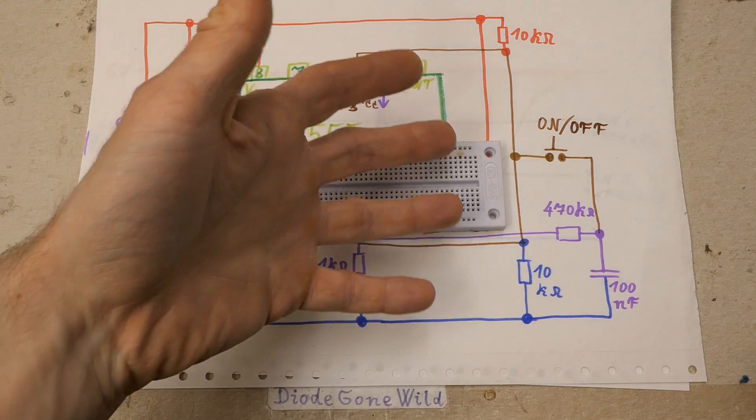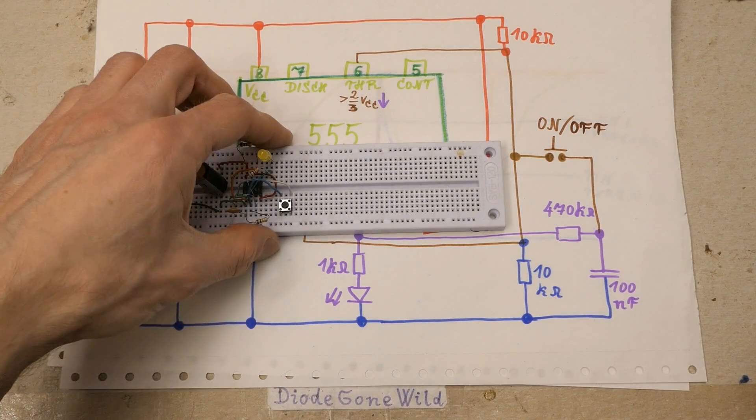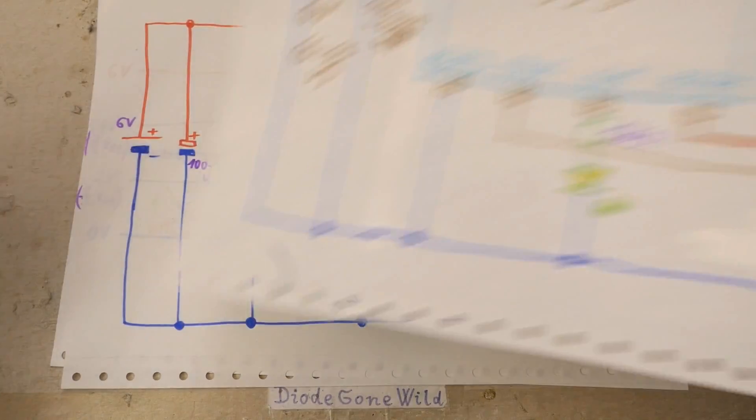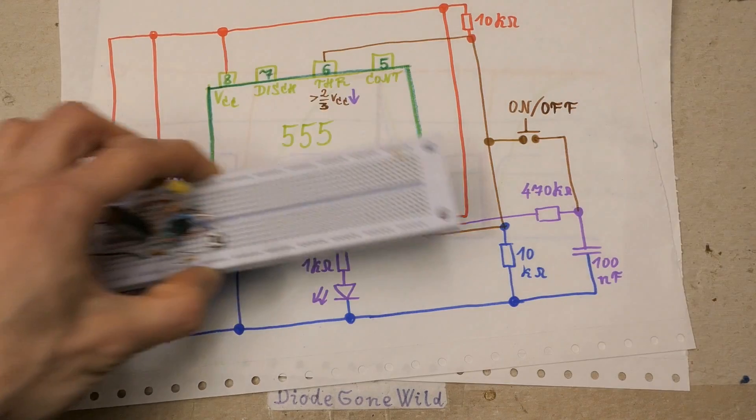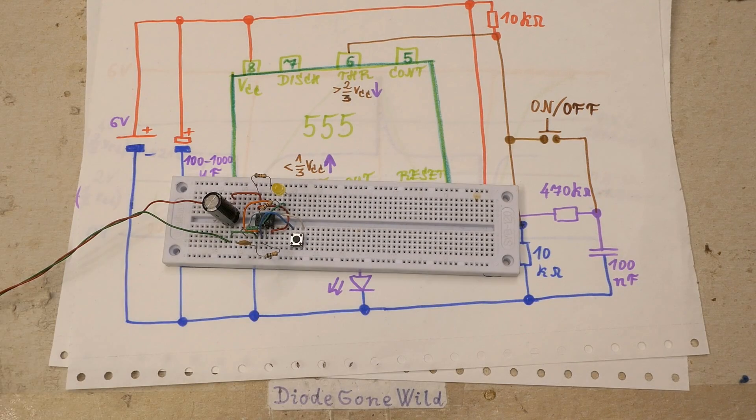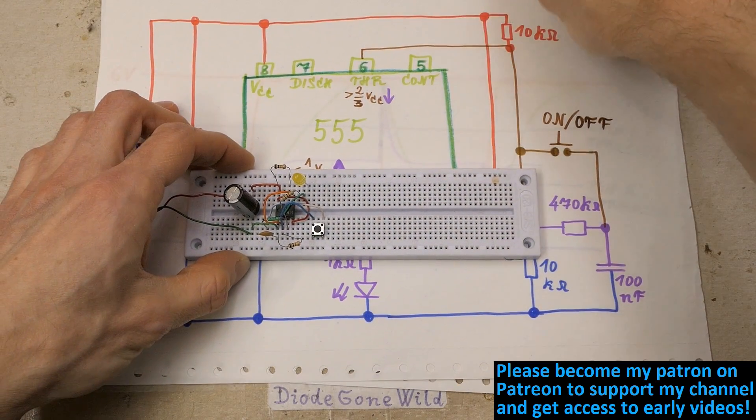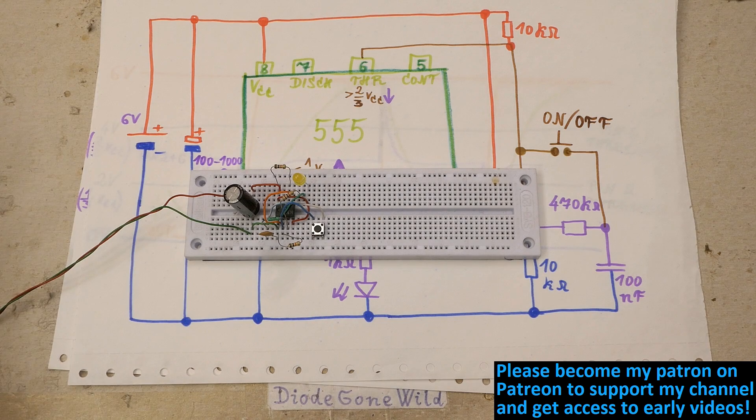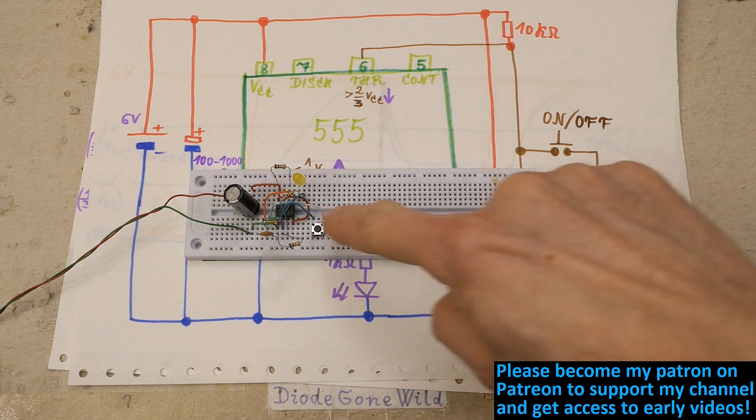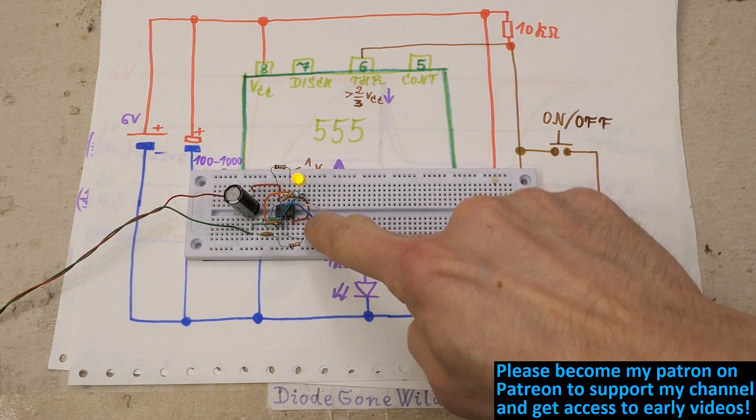So these were the bistable circuits with a 555 chip, the single button on-off circuit and a two button on-off circuit. And in the next episode let's take a look at a monostable circuit or timer with a 555 chip. So that's it and if you like my videos please consider supporting this channel on Patreon, using the thanks button and subscribing. And big thanks to all of you who already supported me, because this channel couldn't exist without you.